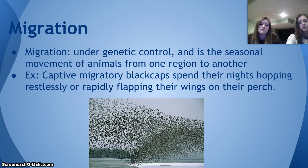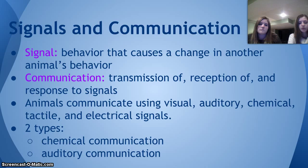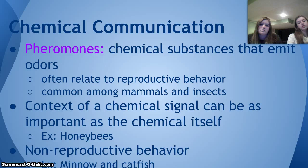Signals and communication: a signal is a behavior that causes a change in another animal's behavior, and communication is the transmission, reception, and response to signals. Animals communicate using visual, auditory, chemical, tactile, and electrical signals. Chemical communication is done through pheromones, which are chemical substances that emit odors. They often relate to reproductive behavior and are most common amongst animals and insects.